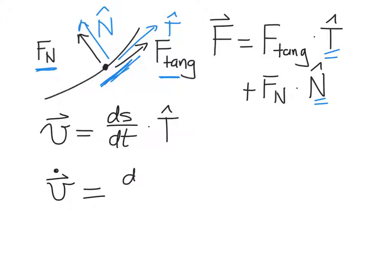That's going to be s̈ T̂ plus ṡ times T̂̇. As we've seen in the past, this is a basis vector that's changing with time. We've argued that the basis vector itself, its change, cannot point along the basis vector. In other words, T̂̇ must be perpendicular to T̂ at every instant.